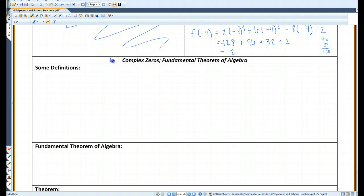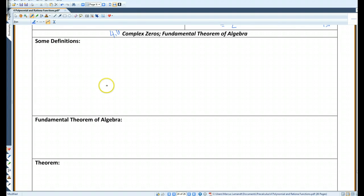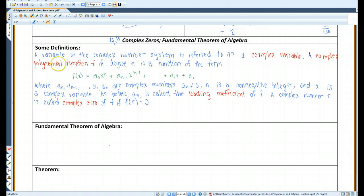Alright, I forgot to write the 4.6 here. This is 4.6 complex zeros, the fundamental theorem of algebra. Alright, some definitions. I'll just go ahead and write these out. Most of these definitions you already know.